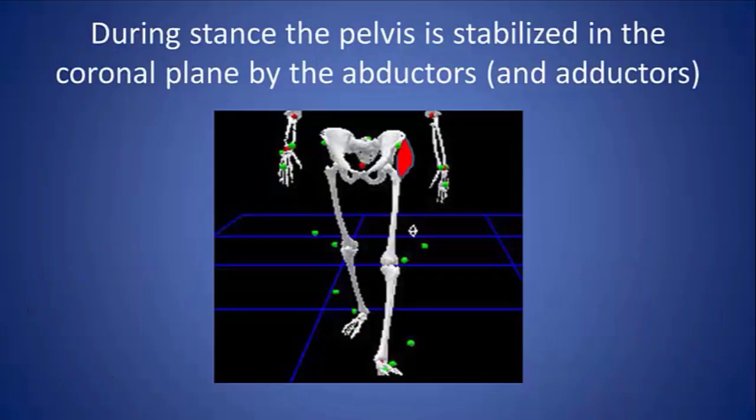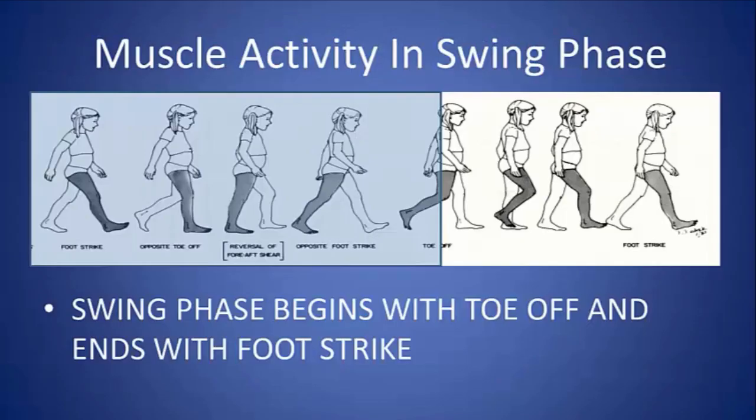During single limb stance, when the opposite foot is off the ground, the pelvis is stabilized in the coronal plane by the abductors, which are balanced by eccentric activity of the adductors in order to keep the pelvis level.